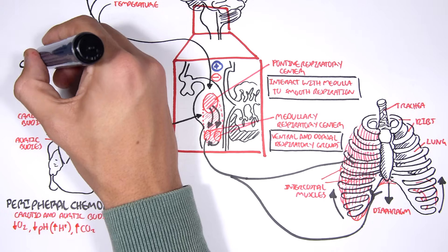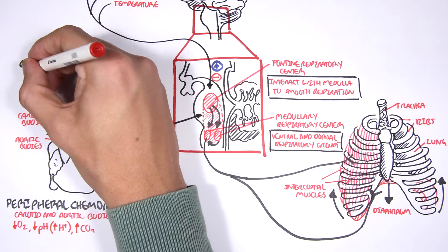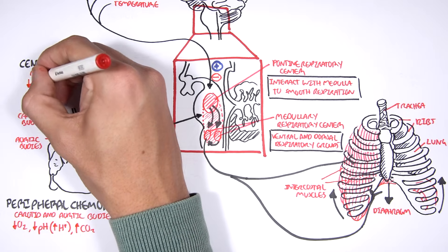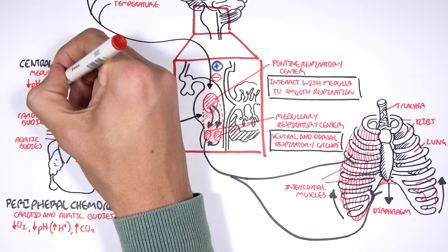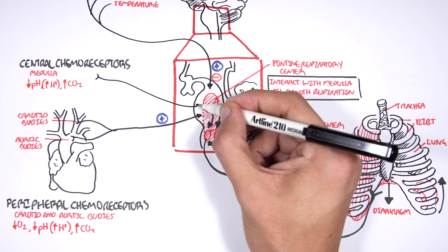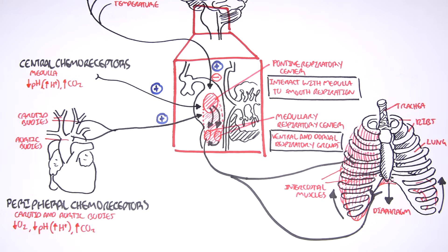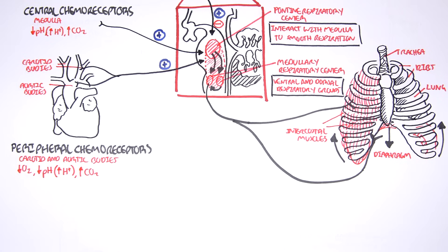There are also chemoreceptors located in the medulla, known as central chemoreceptors. The medullary chemoreceptors do exactly the same thing — they detect changes in pH, and a decrease in pH or an increase in CO2 will stimulate them to activate the respiratory center, so that you breathe faster, thereby breathing out more carbon dioxide and inhaling more oxygen.